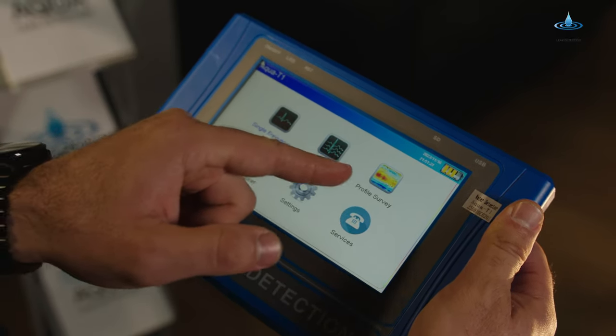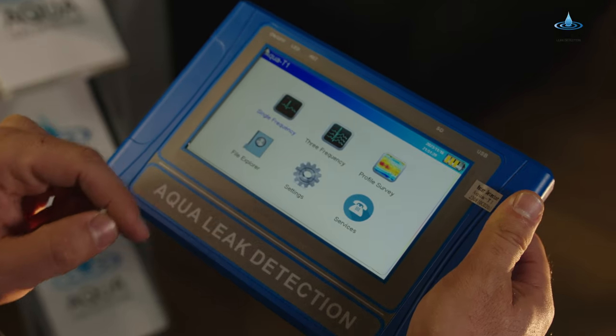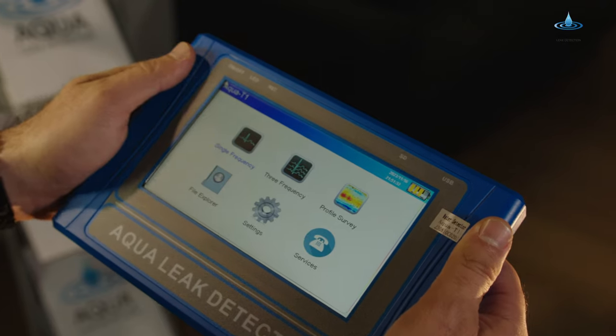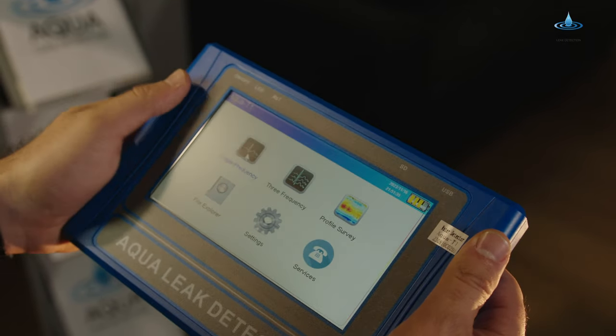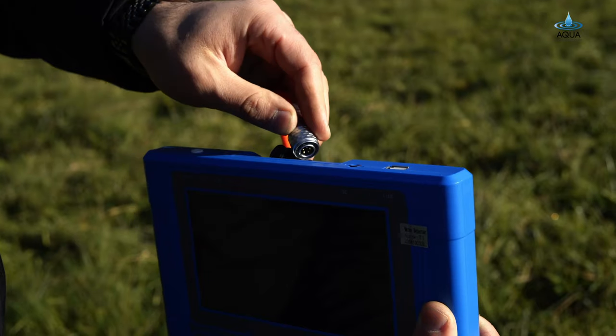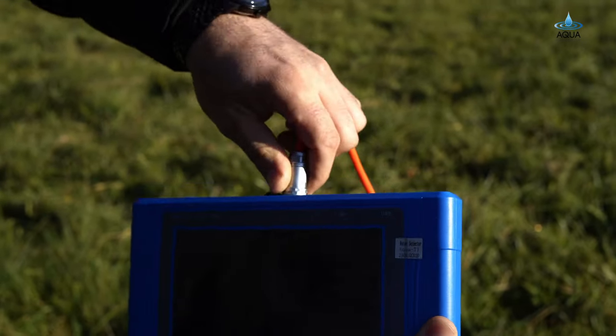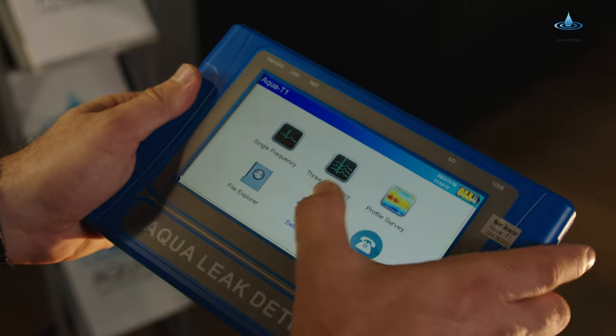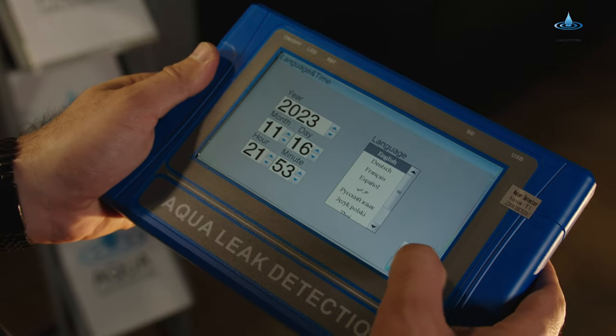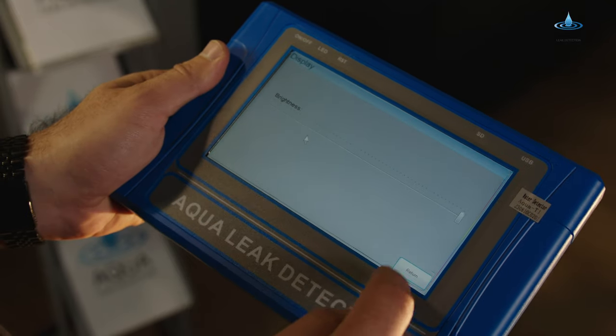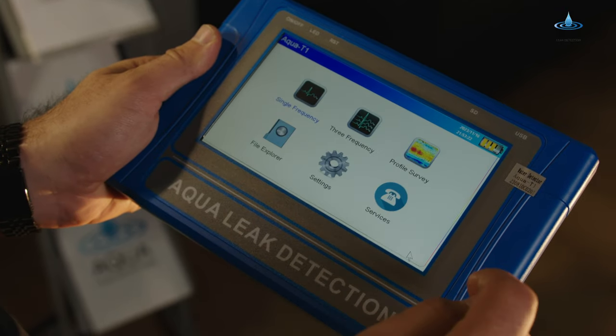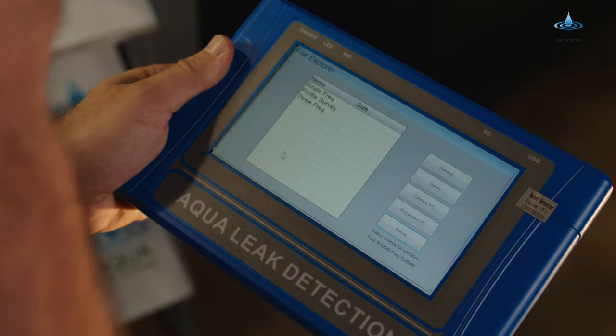We'll start with single frequency. Once your two rods are connected with the orange copper wire, you're ready to go. Under settings you'll be able to find different languages and of course the time, the display brightness, the about settings.